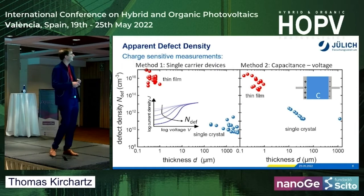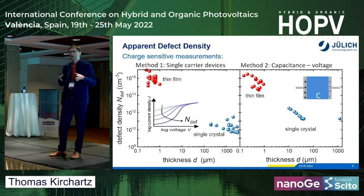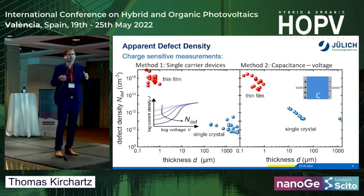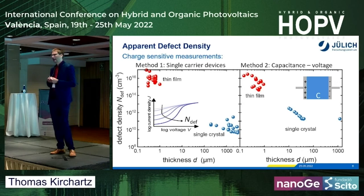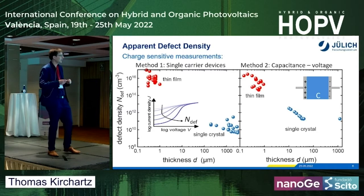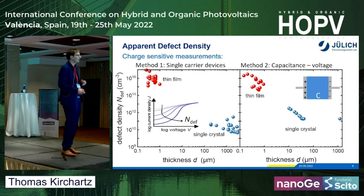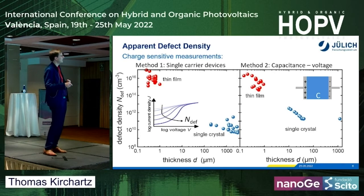When you do a meta-analysis of what the community reports and plot defect density versus thickness, you get two clouds: one in the thin film region of hundreds of nanometers to micrometers, and another in the millimeter range where single crystals come out. And you see there is like many, many orders of magnitude difference — easily six orders of magnitude in defect densities between thin films and single crystals.